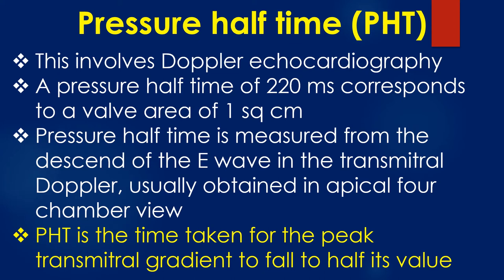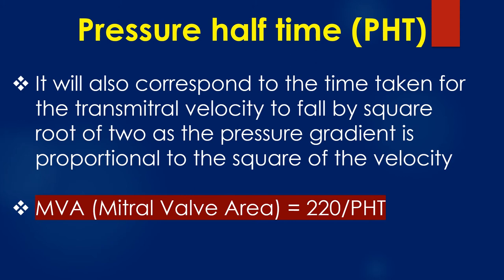Assessment of mitral valve area by pressure half-time involves Doppler echocardiography. A pressure half-time of 220 ms corresponds to a valve area of 1 cm². Pressure half-time is measured from the descent of the E wave in the transmitral Doppler, usually obtained in the apical four-chamber view. It is the time taken for the peak transmitral gradient to fall to half its value, corresponding to the time taken for the transmitral velocity to fall by the square root of 2, since the pressure gradient is proportional to the square of velocity. Mitral valve area equals 220 divided by the pressure half-time.